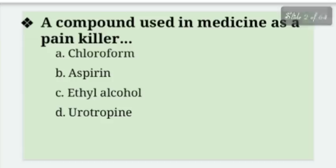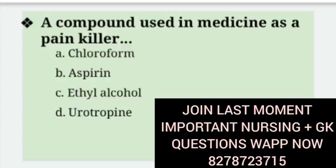A compound used in medicine as a painkiller — medicine mein aisa compound jo as a painkiller used kiya jata hai. Options: Chloroform, Aspirin, Ethyl Alcohol, Eurotropin. The right answer is option B — Aspirin is used in medicine as a painkiller.